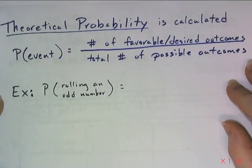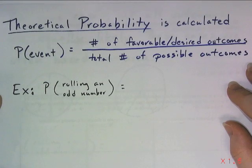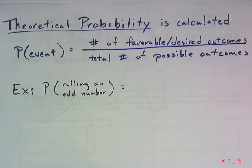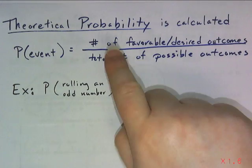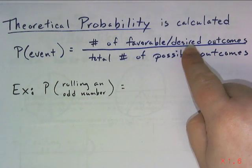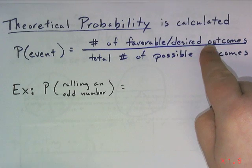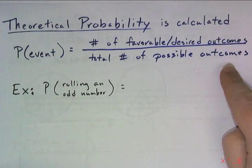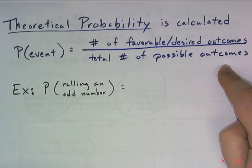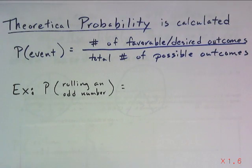One type is theoretical probability. That's calculated based on what is supposed to happen. You look at the number of favorable or desired outcomes that you are hoping to get, and you put that over the total number of possible outcomes. The way that you figure that out is you have to look at the way something is designed, the way your experiment is set up and is supposed to happen.